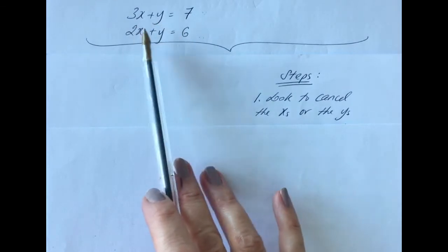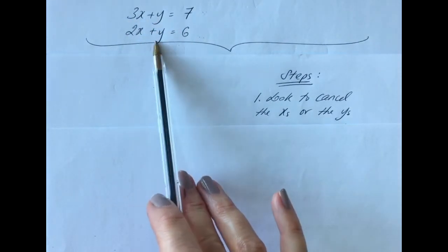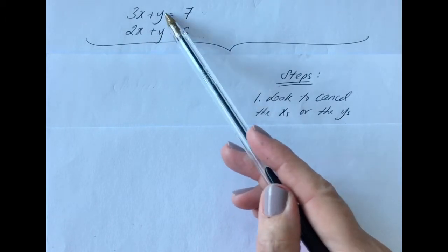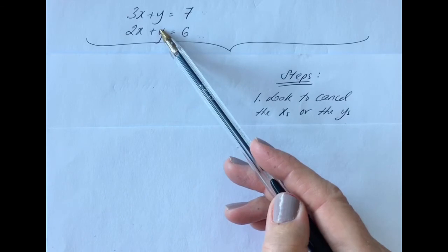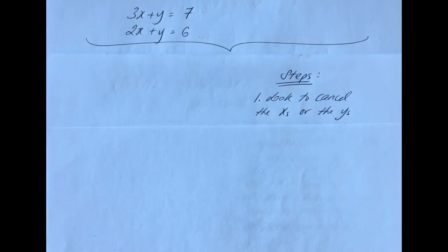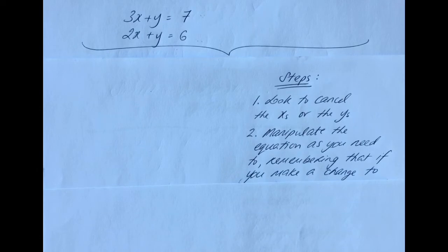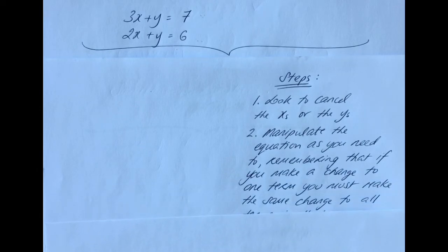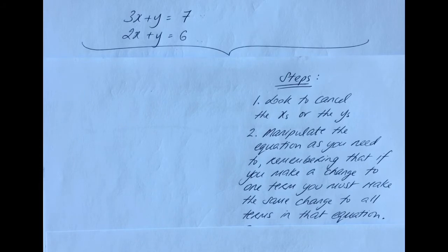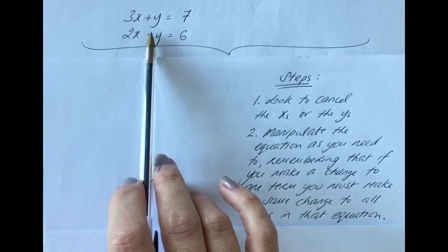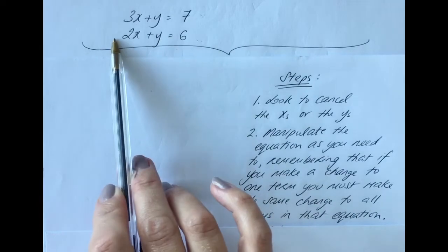It's quite clear that it's going to be easier to cancel the y's. They're not set up to cancel as they are, but it's easiest to work with the y's because we already have the same amount in each equation. Step two is to manipulate the equation as needed, remembering that if you change one term, you must make the same change to all terms in that equation. Looking back, I have a plus y here, so I need a minus y in the second equation.